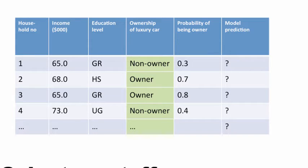By default, you might say if the probability of being an owner is greater than 0.5, then classify it as owner; otherwise, classify it as non-owner. That looks like the intuitive approach, but in reality we don't have to go with 0.5 — that's just an arbitrary number. What we really need to do is select a cutoff value: anything above the cutoff you classify as one thing, anything below as the other.